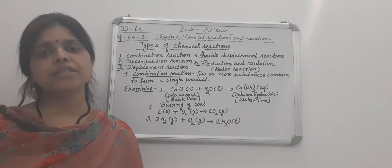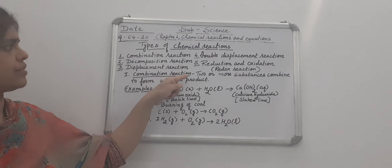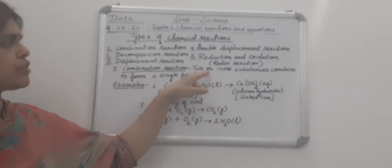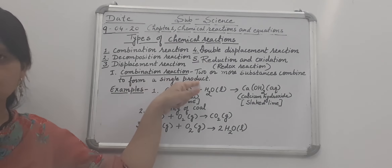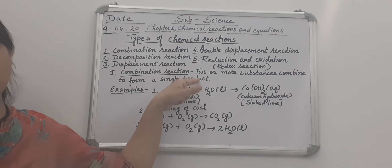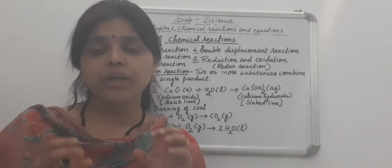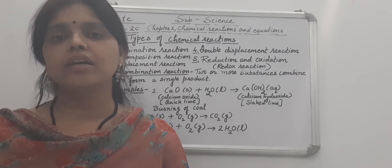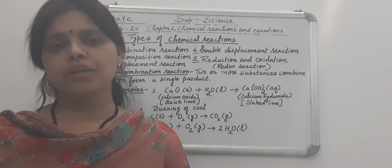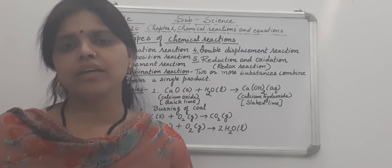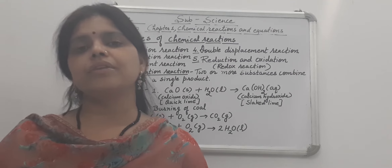First of all we will discuss combination reaction. The reaction in which two or more substances combine to form a single product is called a combination reaction. In a combination reaction, two or more substances come together to give a bigger product.